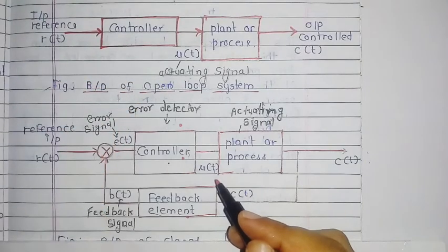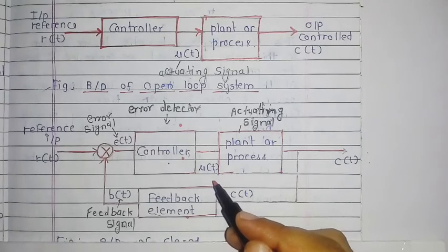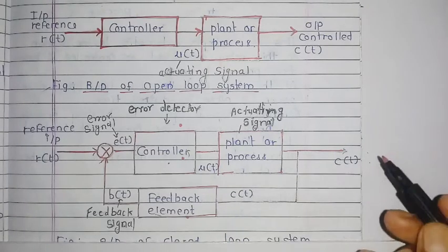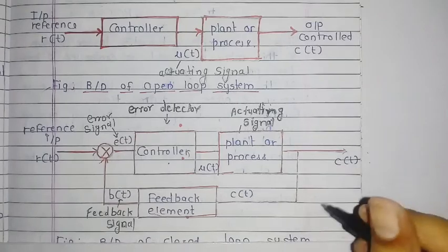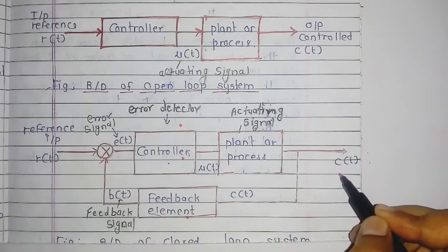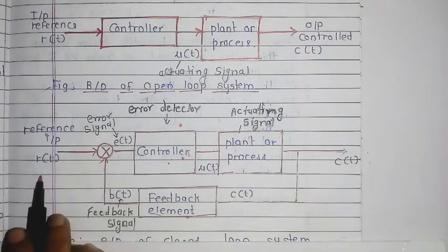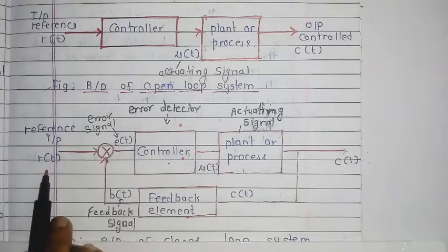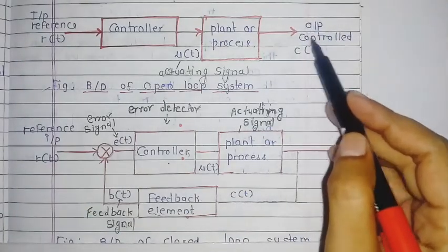The definition of a closed loop system is that any change in the output has an effect on the input — which is the opposite of the open loop system.